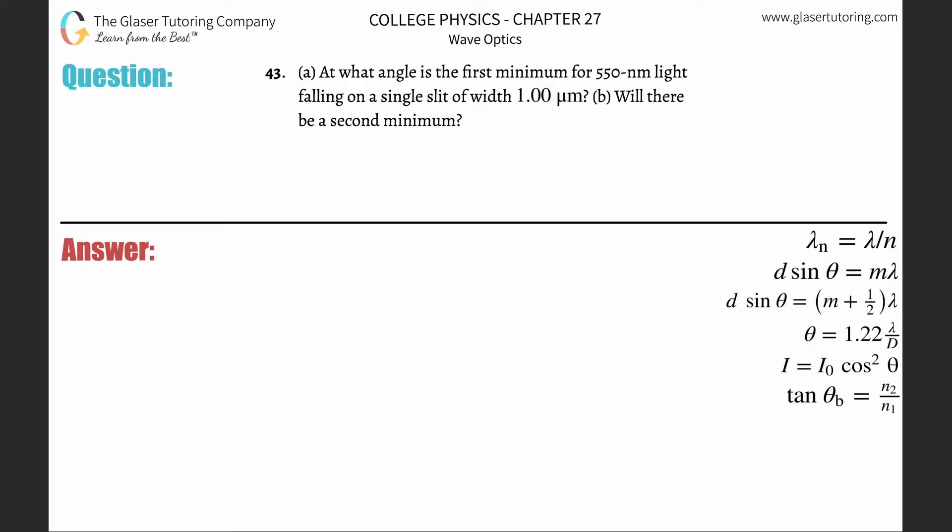Number 43, letter A. At what angle is the first minimum for 550 nanometer light falling on a single slit of width one micrometer?